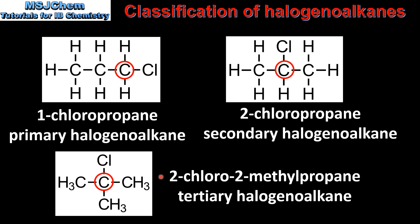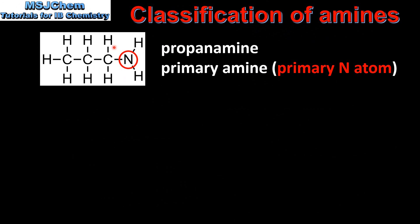Finally we have 2-chloro-2-methylpropane which is a tertiary halogenoalkane. 2-chloro-2-methylpropane has a tertiary carbon atom which is the carbon atom bonded to the functional group and it's also bonded to three other carbon atoms. And finally we have the classification of the amines.